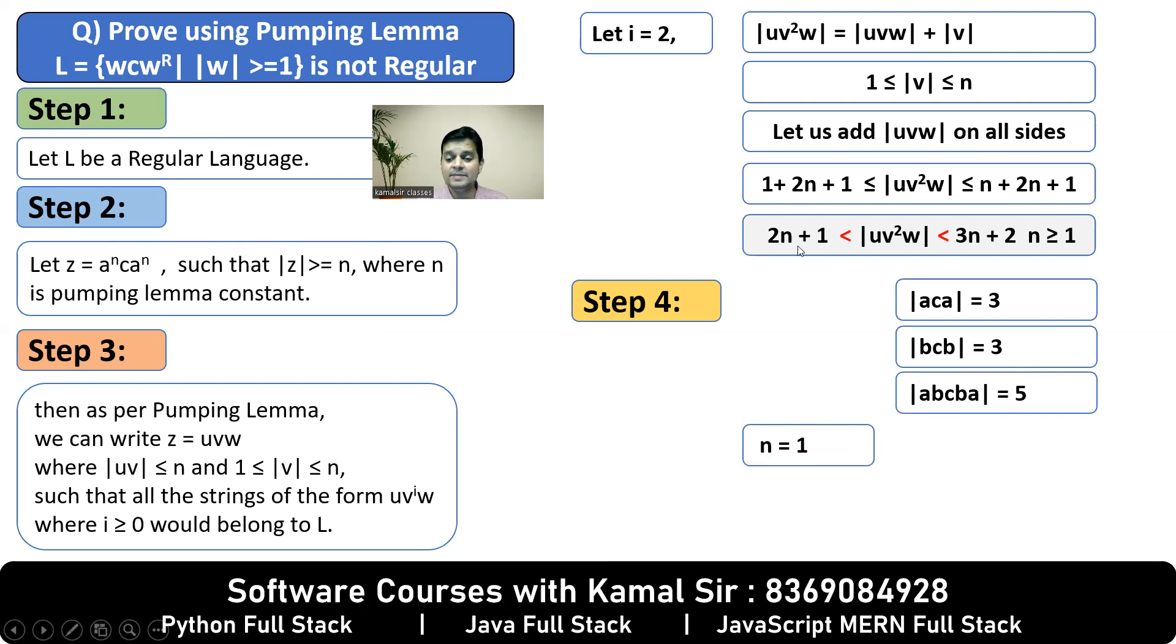this becomes 3, this becomes 5. Between 3 and 5 comes 4, and is 4 odd? No, it's even, right?